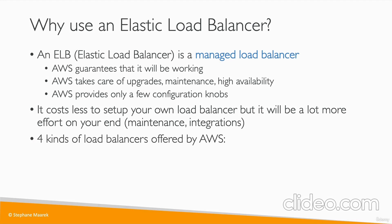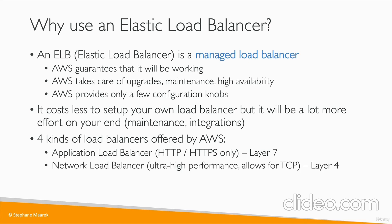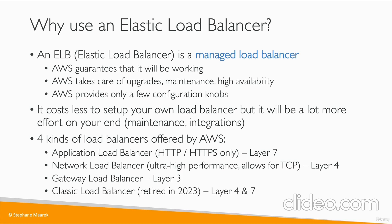There are four kinds of load balancers on AWS. The Application Load Balancer handles HTTP and HTTPS traffic — layer 7. The Network Load Balancer is ultra-high performance, supports TCP and UDP, and is layer 4. The Gateway Load Balancer is layer 3. And the Classic Load Balancer, which is layer 4 and layer 7, is being retired in 2023 and has been replaced by the ALB and NLB.